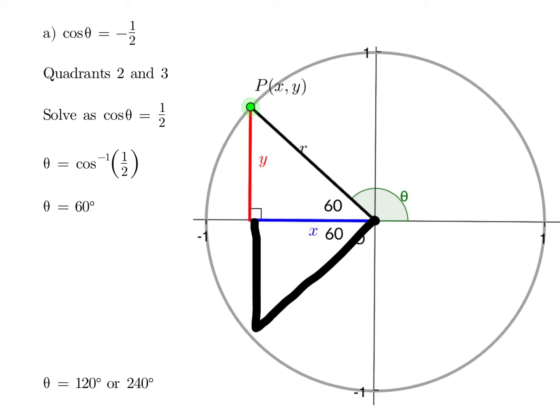From the positive x-axis around to the lines, using the angular measure, we get the first one is 180 minus 60, which is 120, and the second one is 180 plus 60, which is 240.